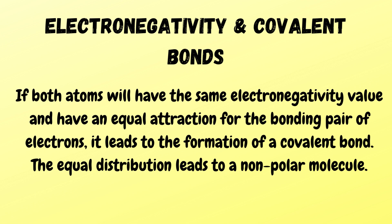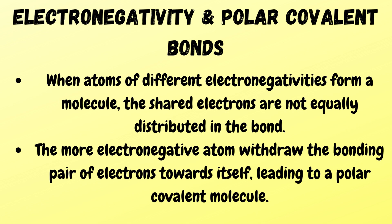If both atoms have the same electronegativity value and have an equal attraction for the bonding pair of electrons, it leads to the formation of a covalent bond. The equal distribution leads to a non-polar molecule. When atoms of different electronegativities form a molecule, the shared electrons are not equally distributed. The more electronegative atom can withdraw the bonding pair of electrons towards itself, which can lead to a polar covalent molecule.